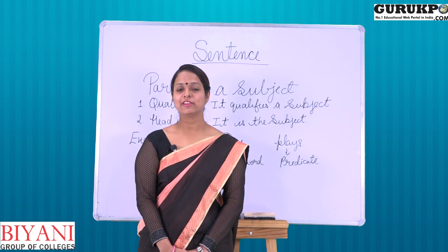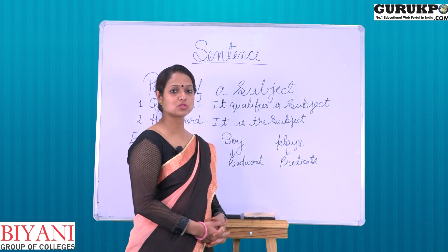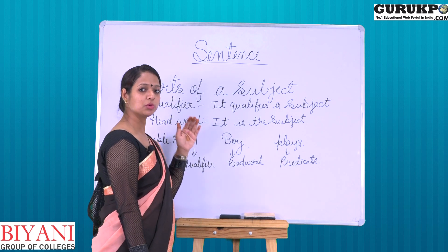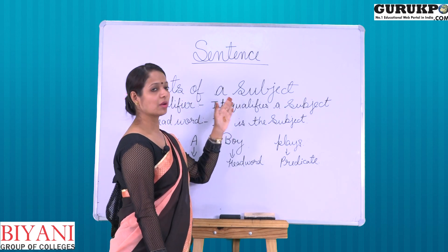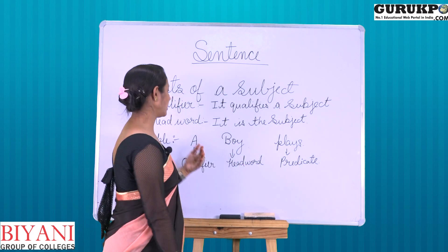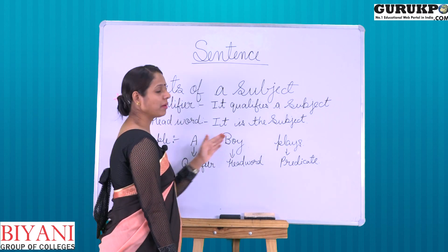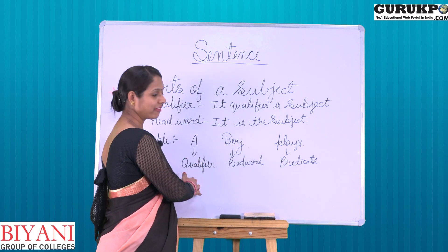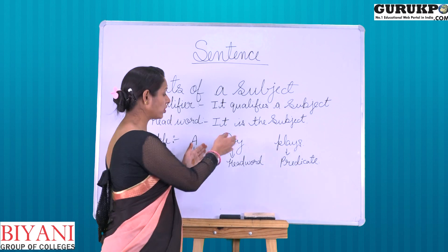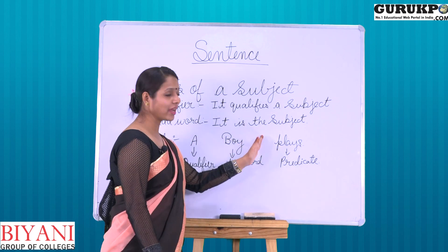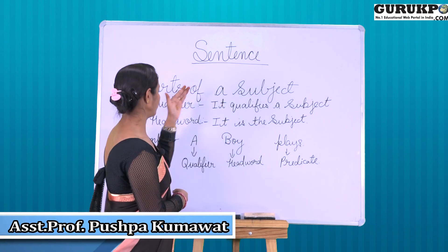A subject is mainly divided into two parts: qualifier and head word. Qualifier is a part of the sentence which qualifies a subject. Head word is itself the subject. In the example 'a boy plays,' 'a' is the qualifier, 'boy' is the head word which is the subject of the sentence, and 'plays' is the predicate because it is the action done by the subject.